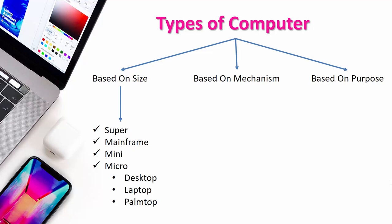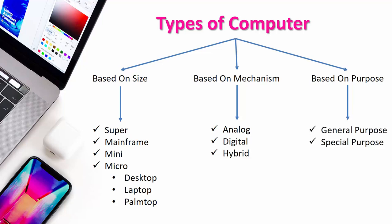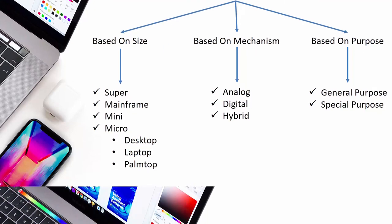Based on mechanism, computers can be divided into three types: analog computer, digital computer, and hybrid computer. Based on purpose, computers can be divided into two types: general purpose computer and special purpose computer.